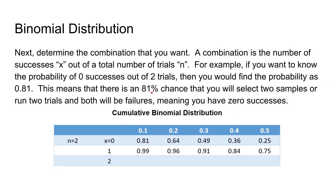How did that 81% come about? You have a 0.1 probability of success for one sample, which means you have a 0.9 chance of failure. If you want two failures, you take 0.9 times 0.9 and get 0.81. The probability of exactly one success out of two is the difference between the next cumulative value and this one: 0.99 minus 0.81, which equals 0.18.